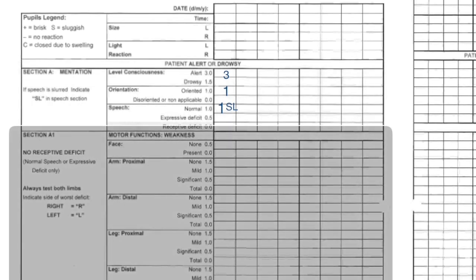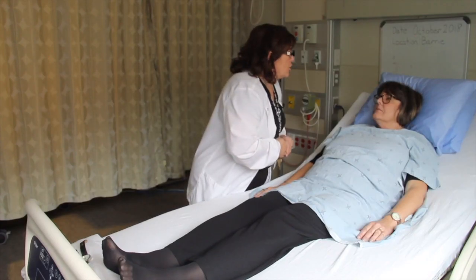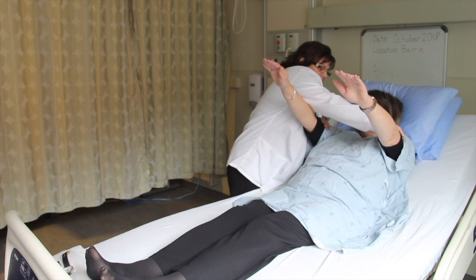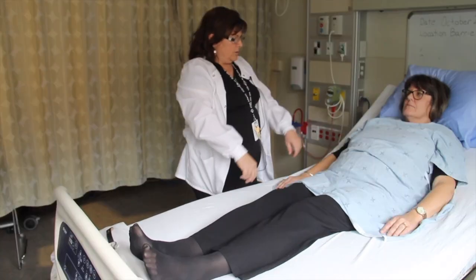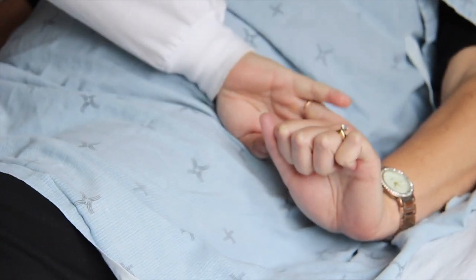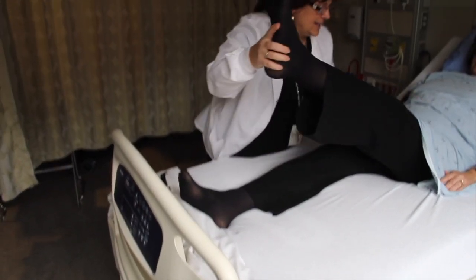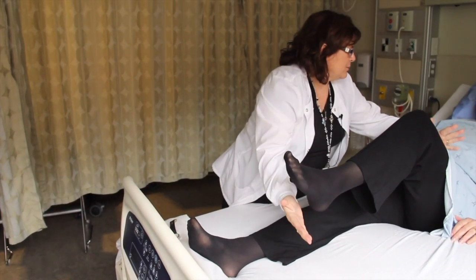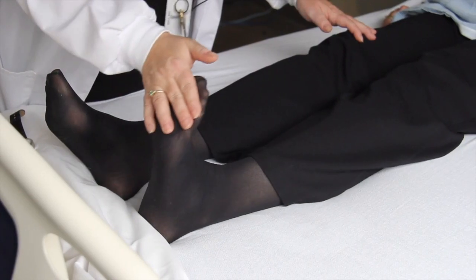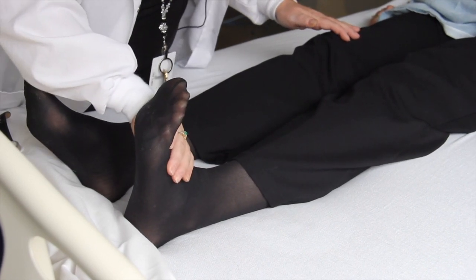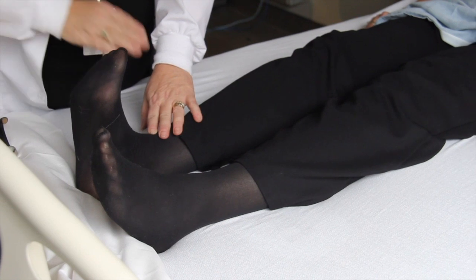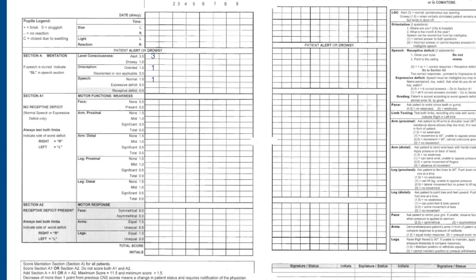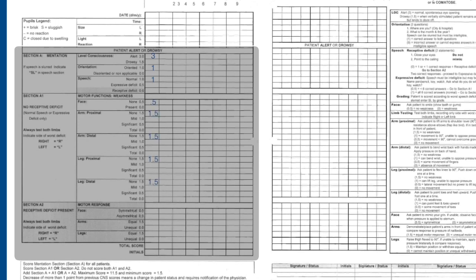Motor function is now assessed. Since the patient has no receptive deficit, Section A1 is completed. The nurse assesses facial weakness: 'Dorothy, can you show me your smile?' Proximal arm strength is assessed by applying pressure to the bicep area. Distal arm strength is assessed with pressure applied between the wrist and knuckles. Proximal leg strength is assessed with pressure to the mid-thigh. Distal leg strength is assessed by asking the patient to dorsiflex their feet — for example, 'bring your toes to your nose' — with pressure applied to the top of the foot. This patient did not display any motor deficits. To tally the score, add sections A and A1.